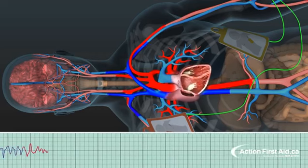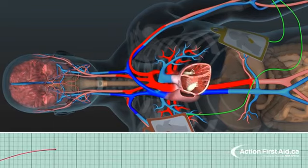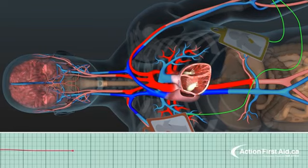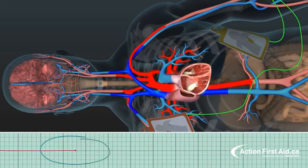The AED will send an electrical current through the heart and back again. The purpose of this shock is to stop the heart completely for a very short period of time from this uncoordinated rhythm and give it time to reset.